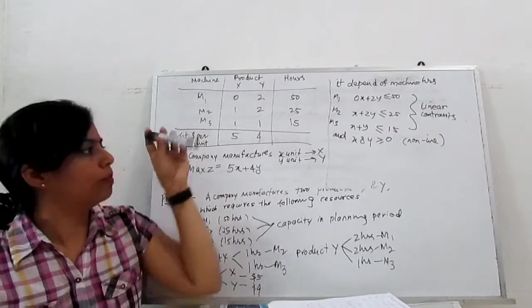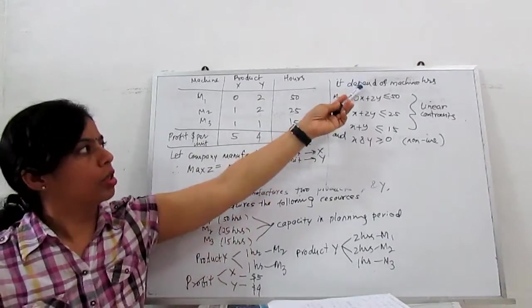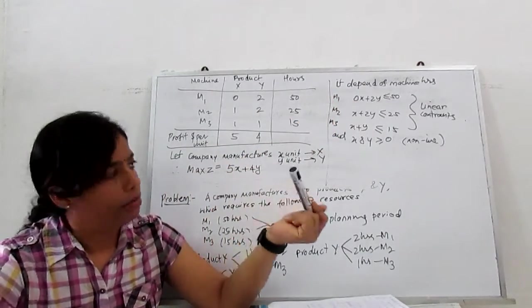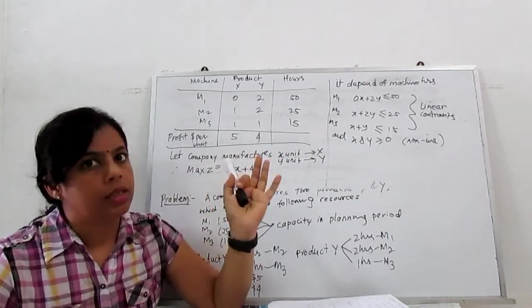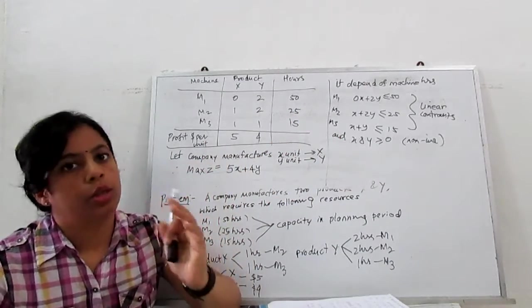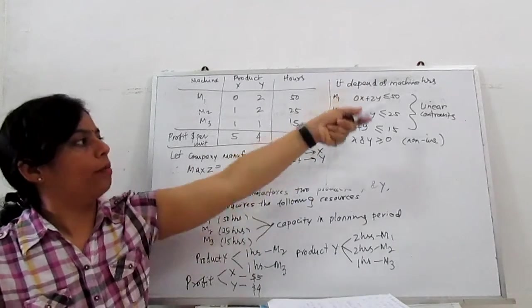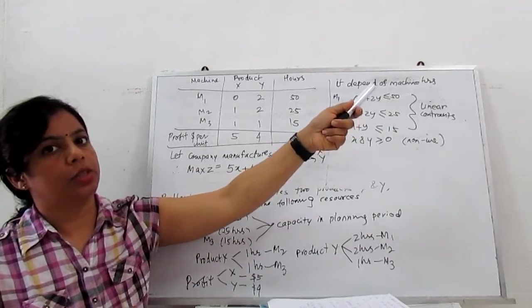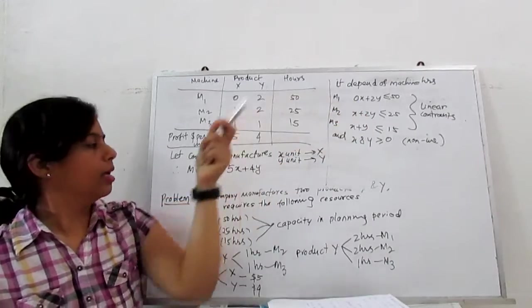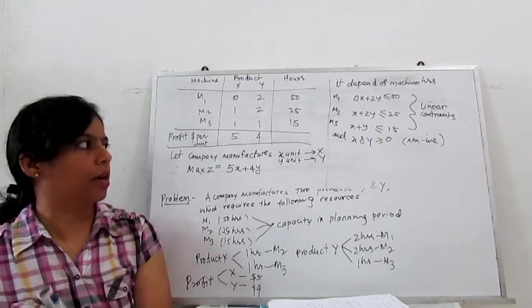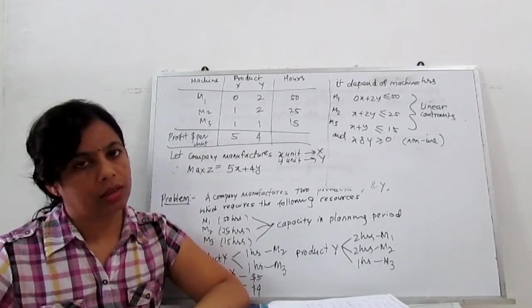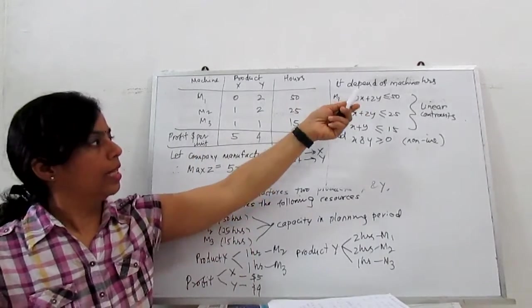This objective function depends on the available machine hours. For machine hours, we can construct the linear constraints. With the help of these linear constraints, we can solve the values of X and Y. Substituting here, we will get the maximized objective function. So how to construct the constraints?